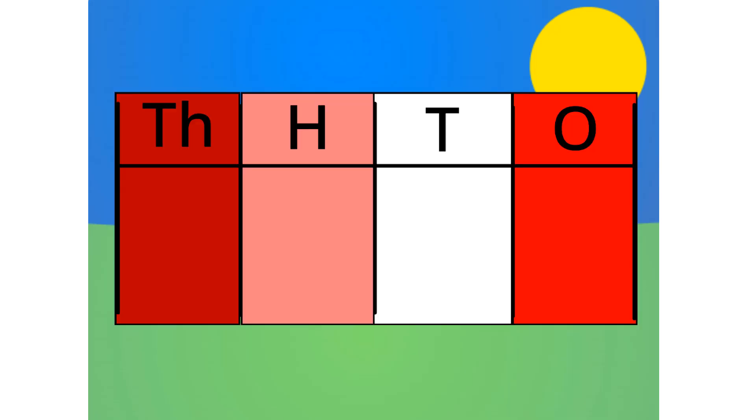Do you notice anything with this table? Correct. The number multiplies by 10 each time it goes left one column. Because it multiplies by 10 each time, we call this system base 10.